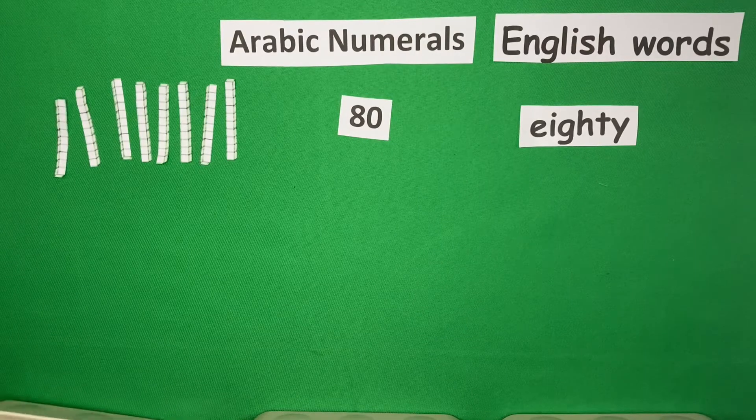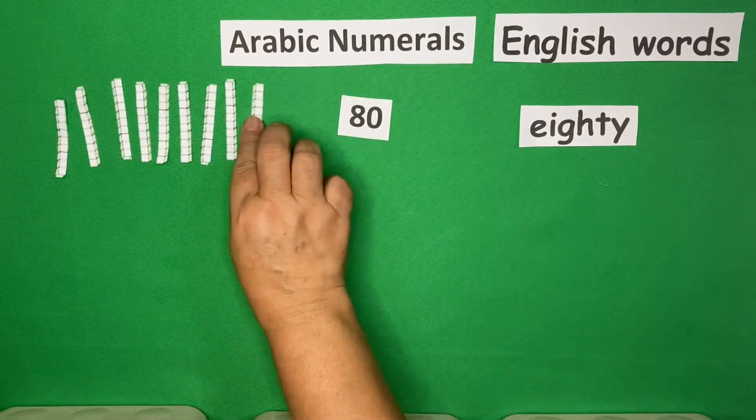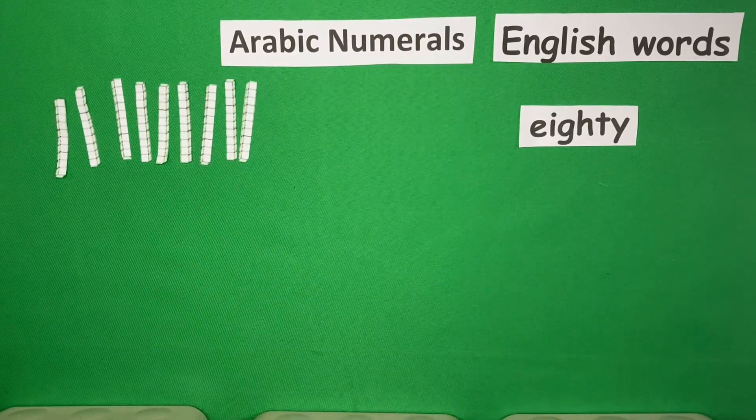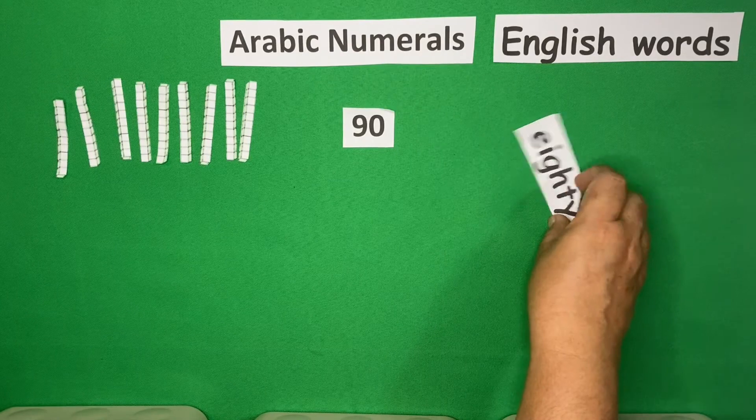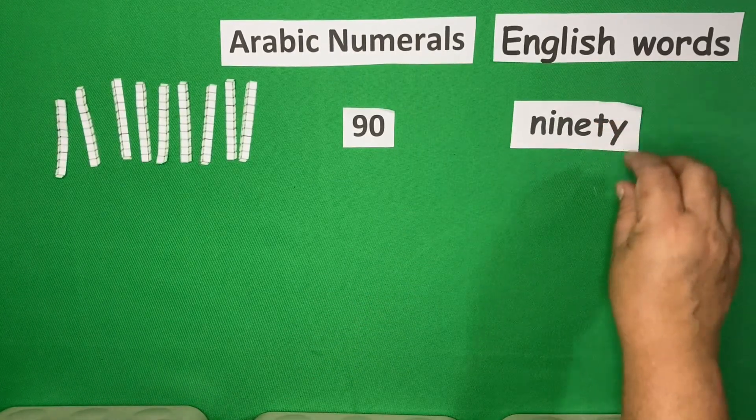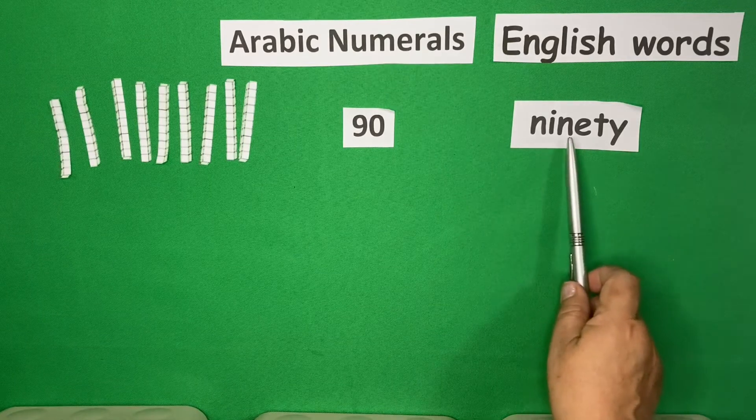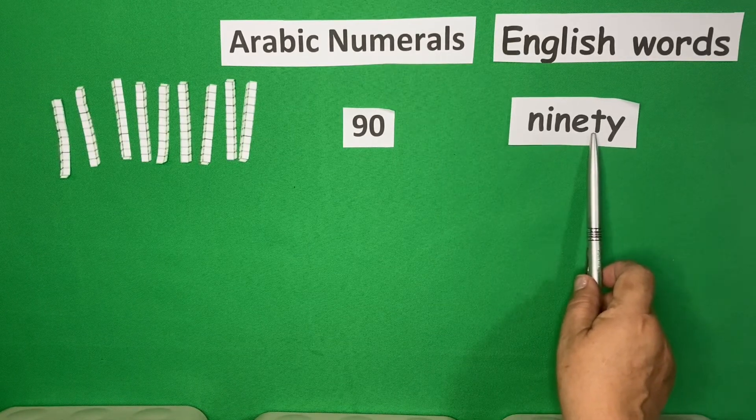Then, 1 more. Here. So, we could have this in Arabic, 90. And in words, it's N-I-N-E-T-Y, 90.